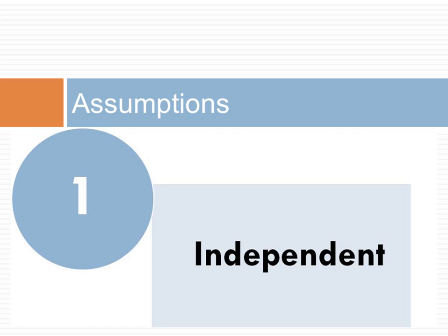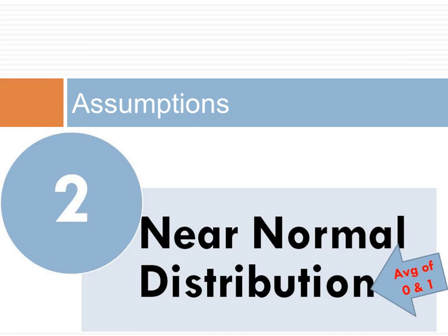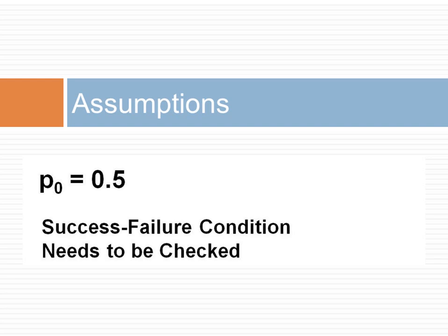First, we check the assumptions. Our first assumption was that the observations in the sample are independent. Since we took a random sample, then this is likely, especially if we sampled less than 10% of the population. The second assumption is that the rate of use of our hospital services can be considered an average, and this sample average has a near normal distribution. In a one-proportion hypothesis test, the success value or condition is checked using the null proportion. The hypothesized null value for the proportion is 50% or 0.5.